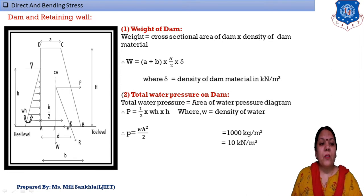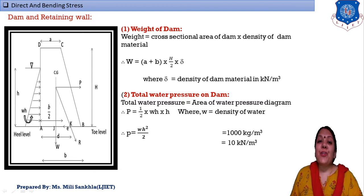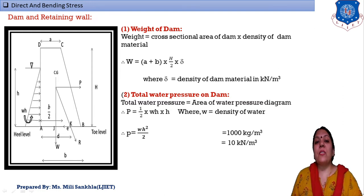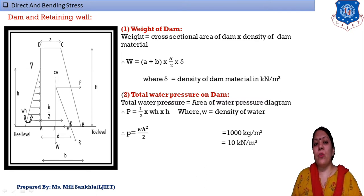In the figure, 'aj' is the distance to the center of gravity (CG) of the dam section from the toe, and 'W' is the self weight of the dam. 'jk' is the distance where the resultant force R cuts the base. 'b' is the bottom width of the dam.